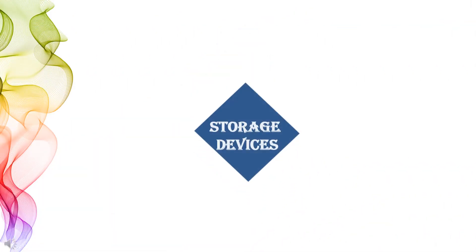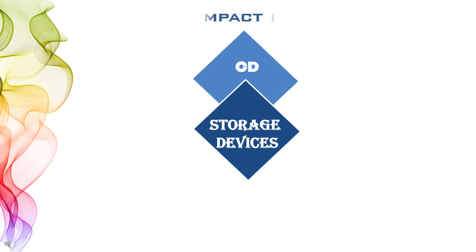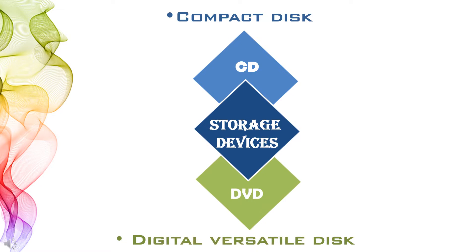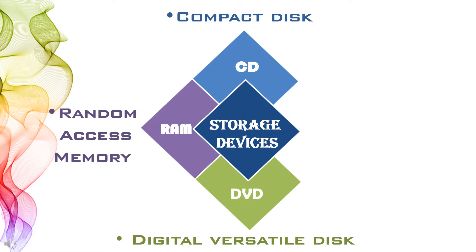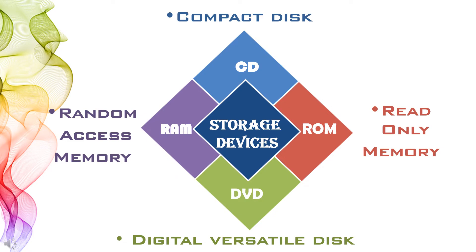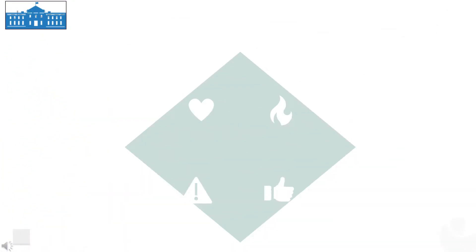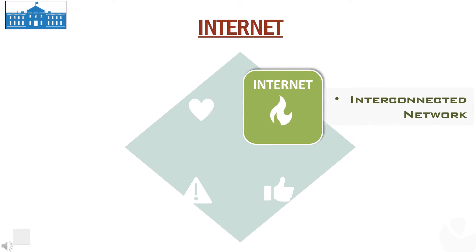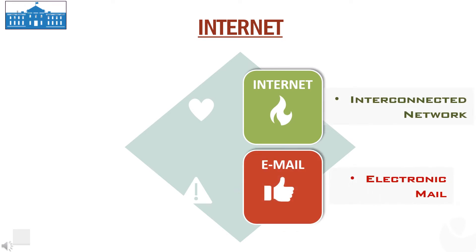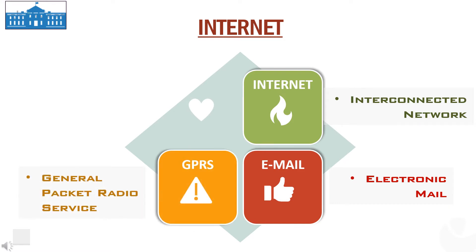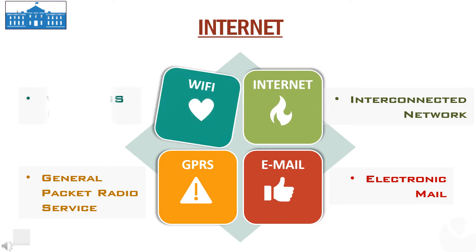Some words related to storage devices — CD: Compact Disc. DVD: Digital Versatile Disc. RAM: Random Access Memory. ROM: Read Only Memory. Some commonly used terms related to the Internet — Internet: Interconnected Network. E-mail: Electronic Mail. GPRS: General Packet Radio Service. Wi-Fi: Wireless Fidelity.